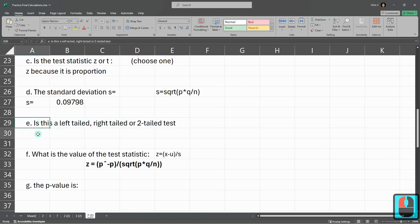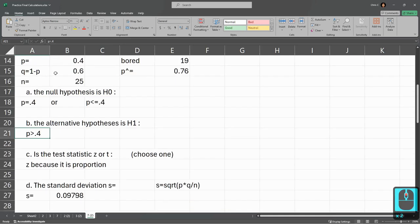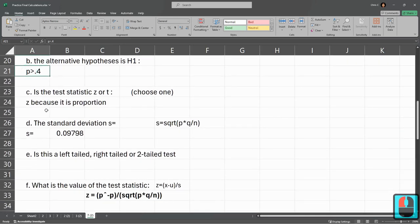Left-tailed, right-tailed, or two-tailed test. That comes from the alternative hypothesis. We're looking for a larger proportion, a larger P than 0.4. So this is a right-tailed. Because we're looking for a larger, if we're looking for a smaller, it would be left-tailed. And if we're looking for not equal, meaning larger and smaller, or larger or smaller, then it would be two-tailed test.